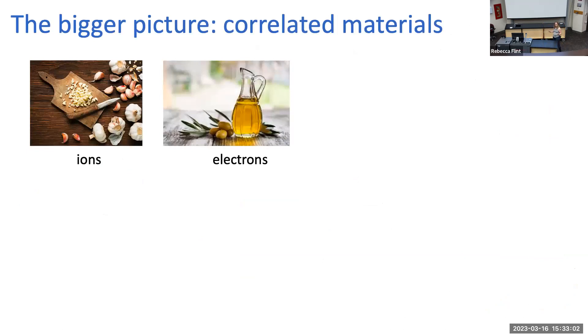I am a condensed matter theorist. I'm interested in what we call correlated electronic materials, and I also like to cook a lot. This is my favorite analogy for why correlated electrons are interesting and why you would study them.